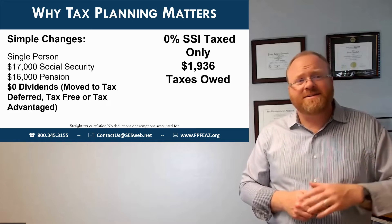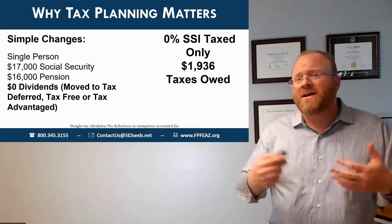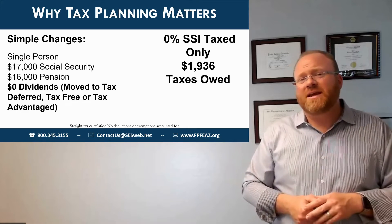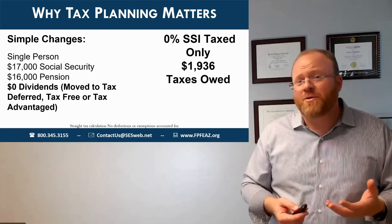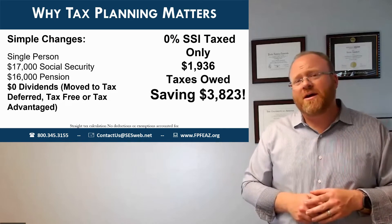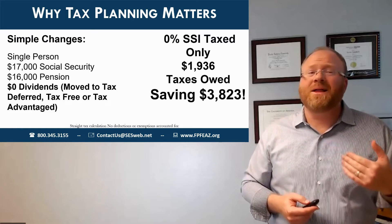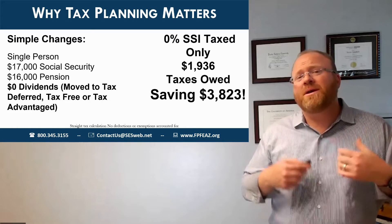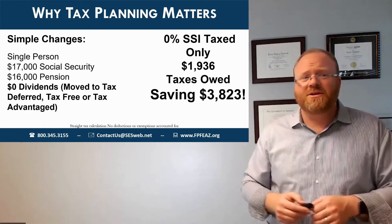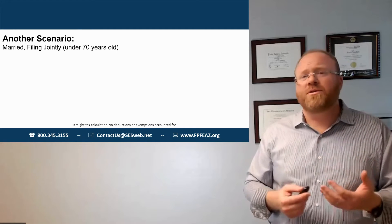Technically on that $16,000 pension, the straight tax calculation, she owed $1,900. When you add the complication of the tax return and take the standard deduction, she'd really actually owe no taxes. The point is that it saved her $3,800 in taxes. We can complicate this as much as we want, but the bottom line is this is what we talk about when we want to make somebody as efficient as possible with their situation. This person was happy with $33,000 worth of income.